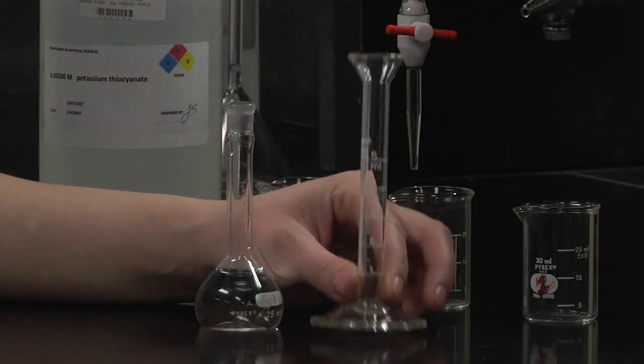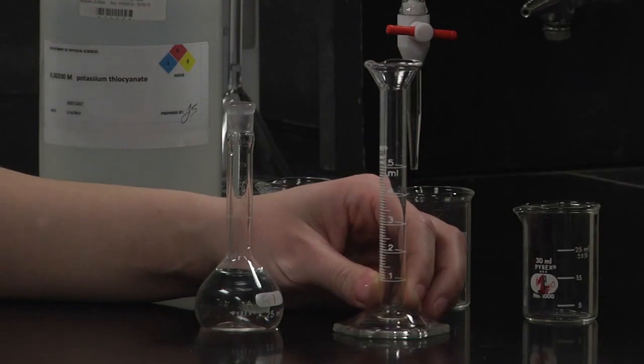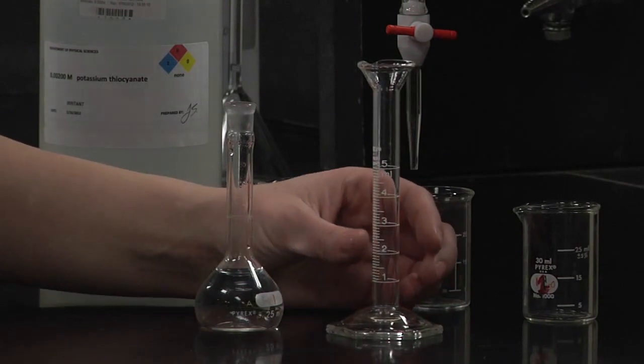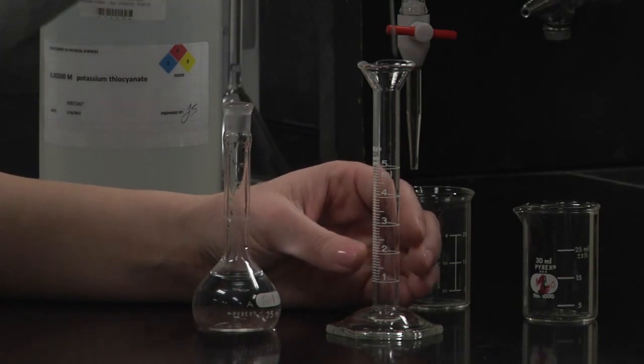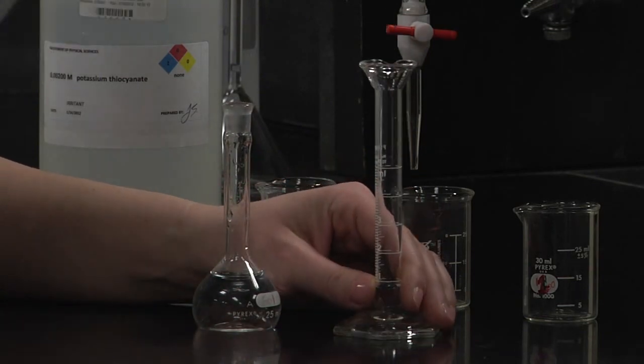Preferably one that only goes up to 5 milliliters because it will be more accurate. I'm going to take some out of here and fill this up until I get to 3 milliliters. Now that we've added our dilute iron solution to each of our beakers, we will now add the designated amount of nitric acid.